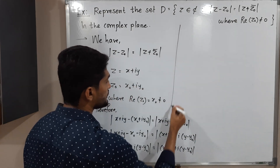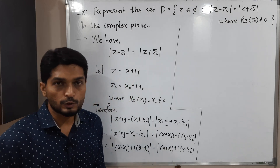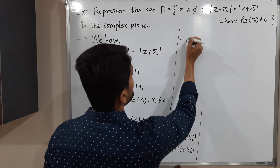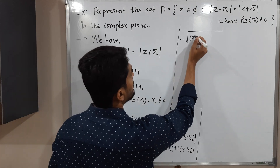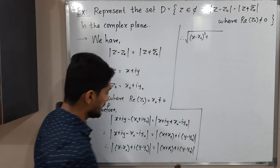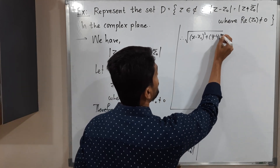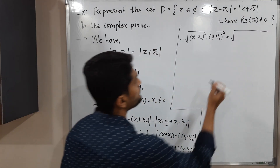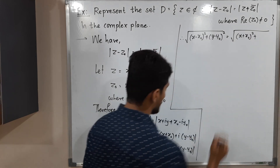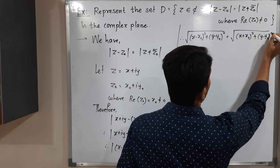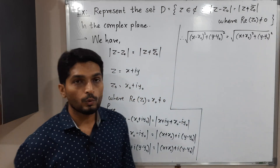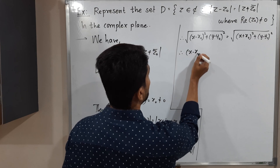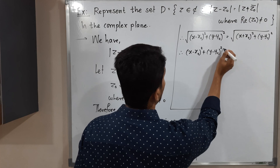Using the definition of modulus as the square root of the square of the real part plus the square of the imaginary part, we get: square root of (X minus X naught)² plus (Y minus Y naught)² equals square root of (X plus X naught)² plus (Y minus Y naught)². To remove the square roots, we square both sides.